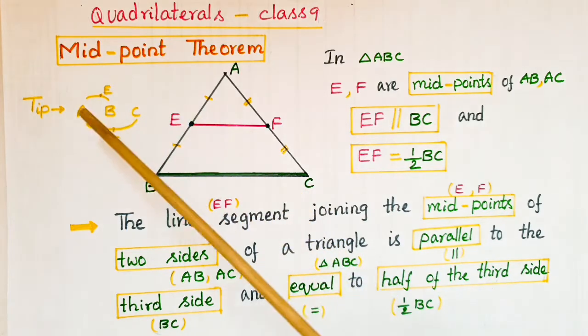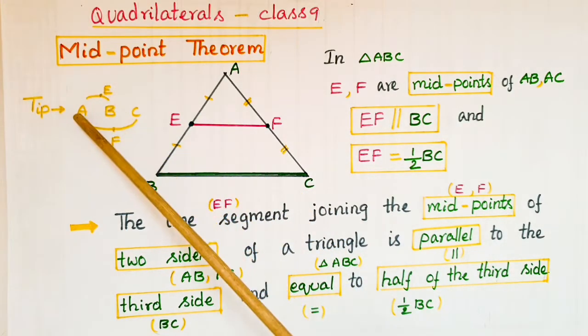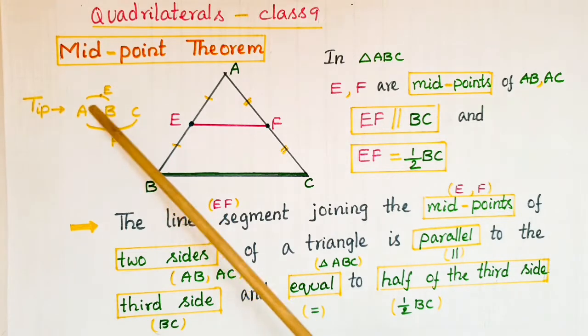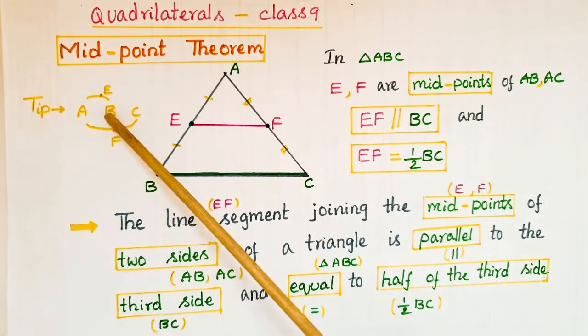Without seeing the figure, we can directly write: In triangle ABC, E is the midpoint of AB and F is the midpoint of AC. Therefore, EF is parallel to BC and EF equals half of BC.